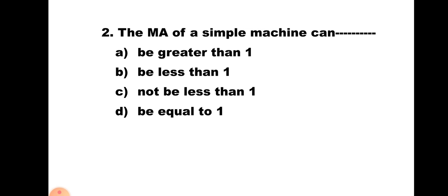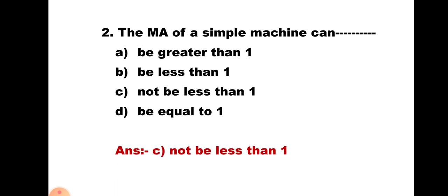Question number 2: The MA of a simple machine can — A) be greater than 1, B) be less than 1, C) not be less than 1, D) be equal to 1. You have to select the most correct choice. It can be greater than 1, it can be equal to 1, but it cannot be less than 1. So the correct option is C) not less than 1.